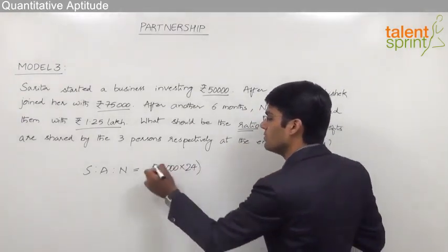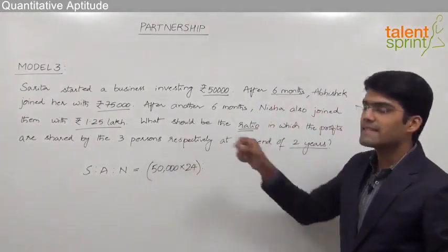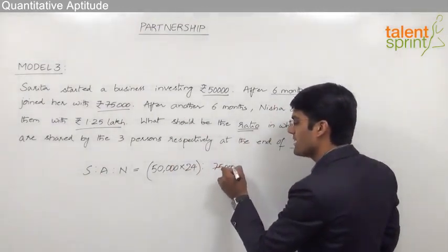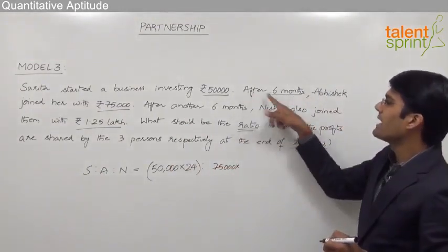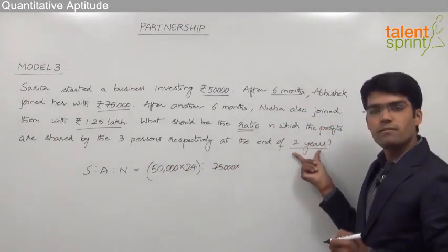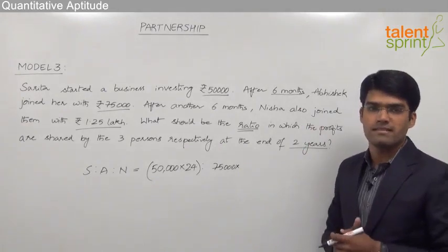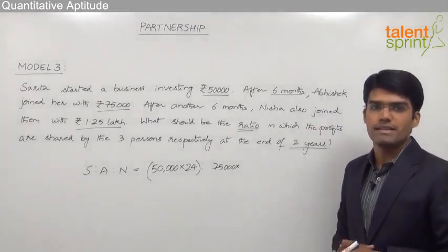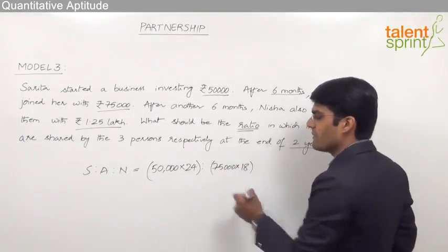The investment made by Abhishek is 75,000. Abhishek joined Sarita after 6 months, so from the total period of 2 years, Abhishek was not present for the first 6 months, which means he was present only for 18 months. So his investment was there for 18 months.